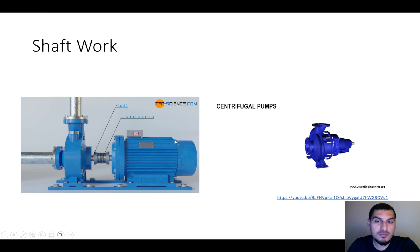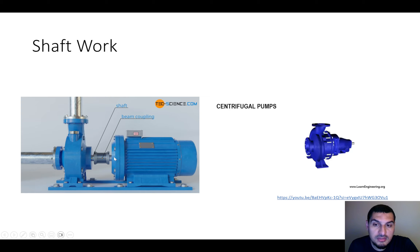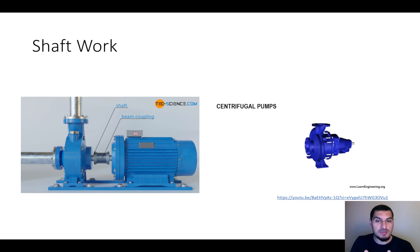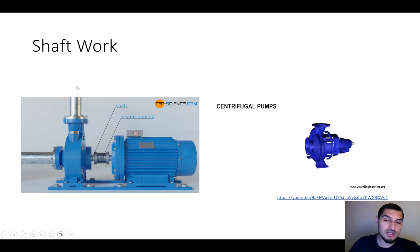The pump consists of two main parts. The first is the motor, which converts electric energy into mechanical energy — it takes electricity and converts it into rotational motion. This rotational motion is transferred via a coupling to the main part of the pump, where the fluid pumping takes place. The fluid goes in here and comes out. The fluid doesn't go anywhere close to the motor; it's confined in the pumping section.